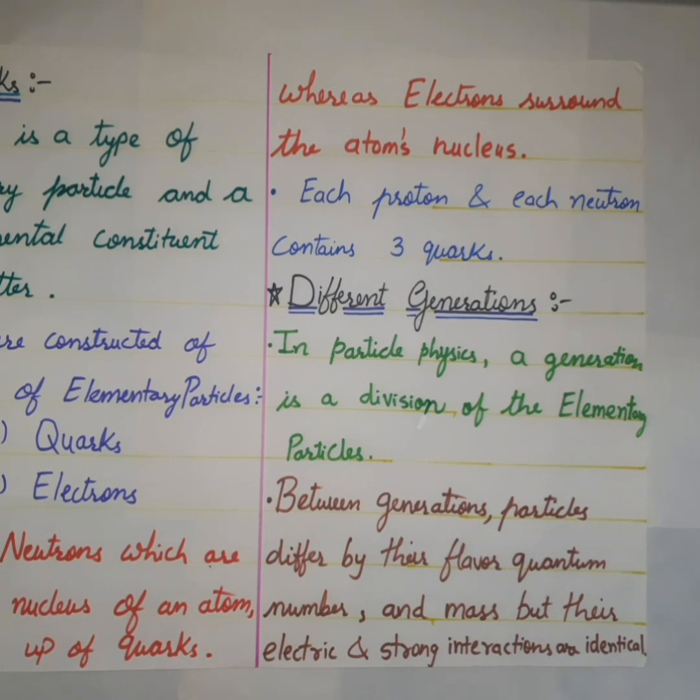Here, flavor quantum number is the value of isospin, strangeness, charmness, bottomness, and topness for quarks.